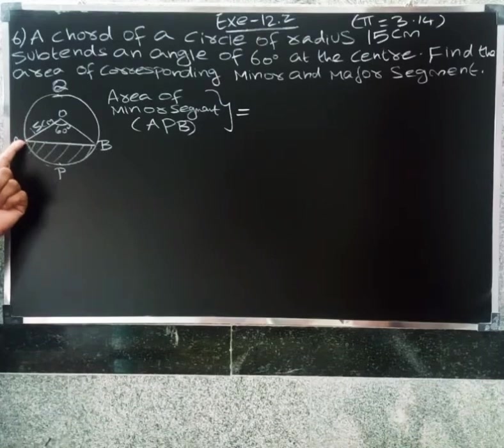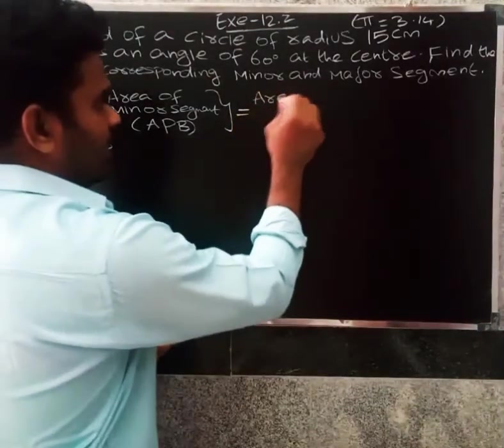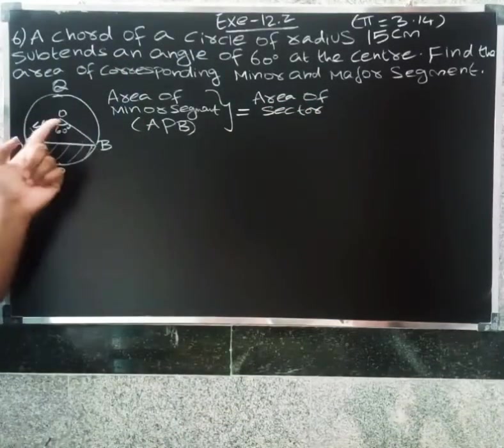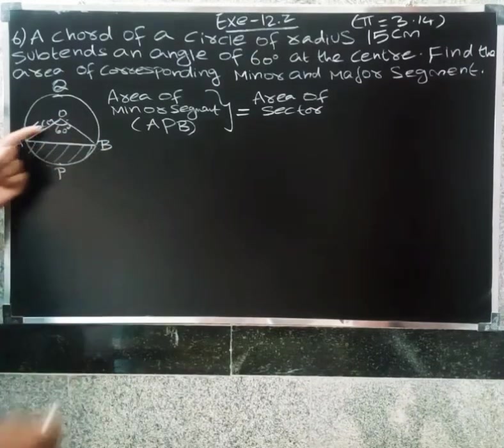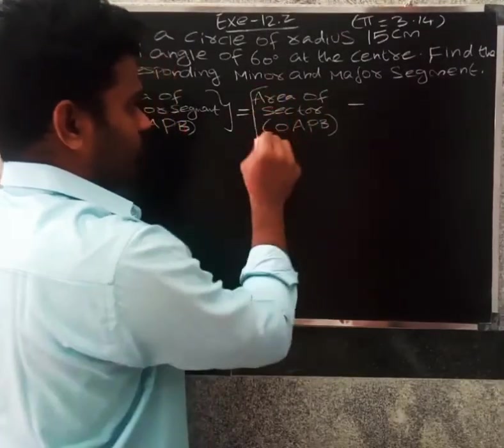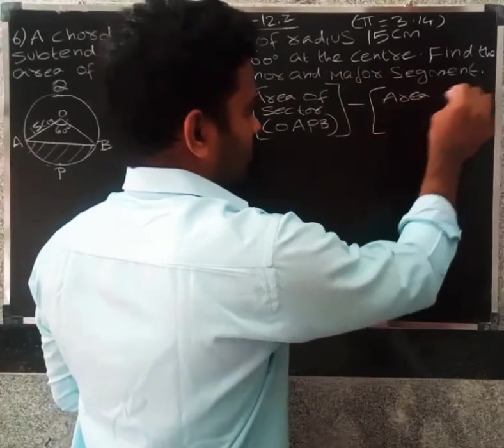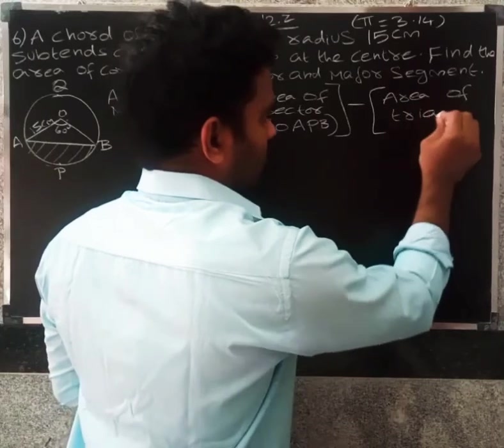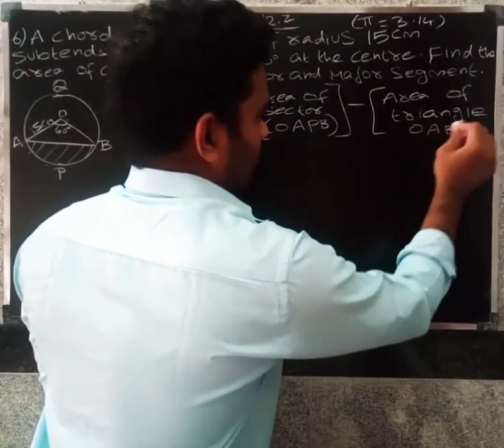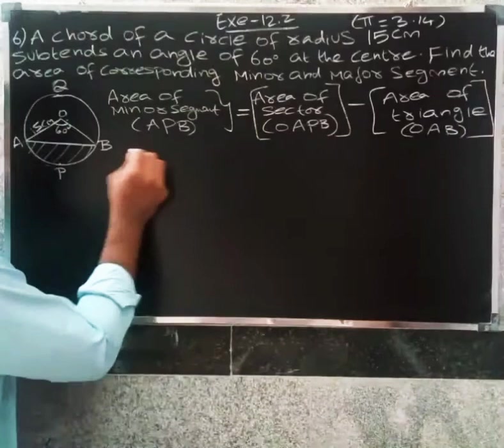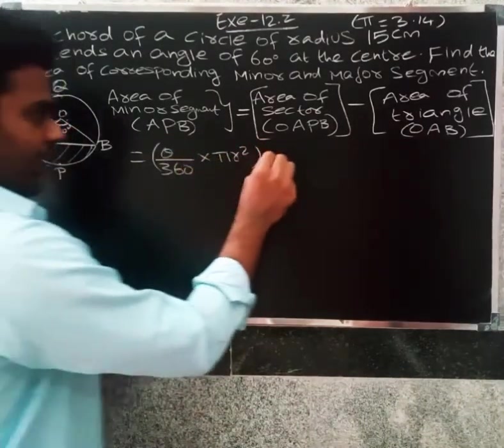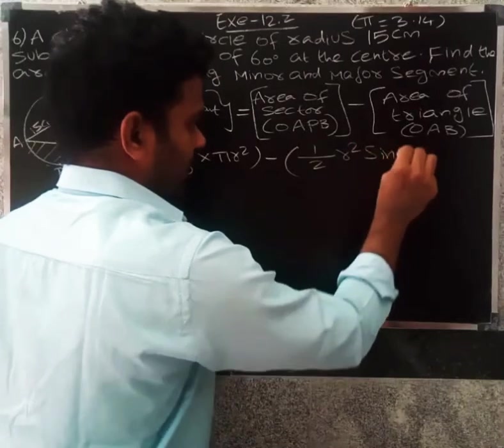Area of sector O-A-B is the sector. So area of sector O-A-B minus area of triangle. Area of triangle, O-A-B is the area of triangle. The area of sector formula: theta by 360 into pi r squared minus area of triangle, formula is r squared sin theta.